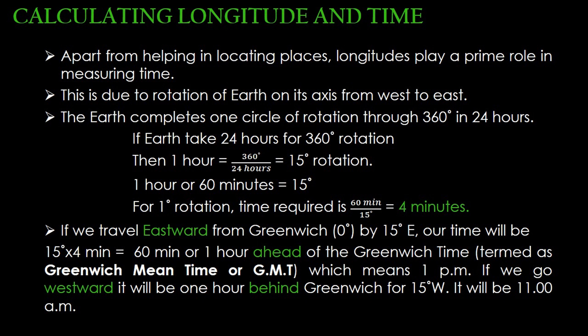So it takes 60 minutes for 15 degrees rotation. For 1 degree rotation, the time is 60 minutes divided by 15 degrees, which is equal to 4 minutes. So the earth takes 4 minutes to complete 1 degree rotation.